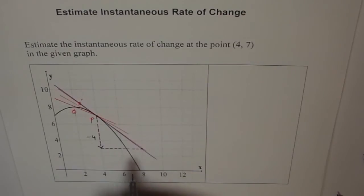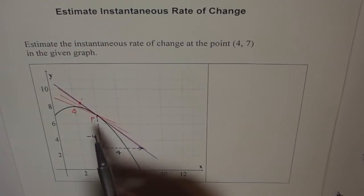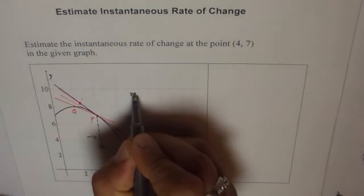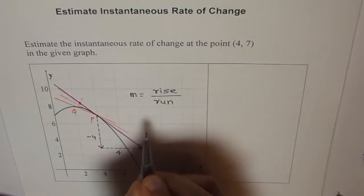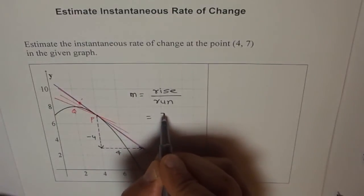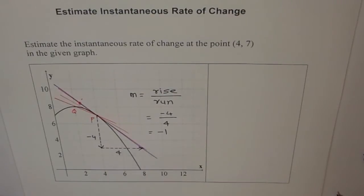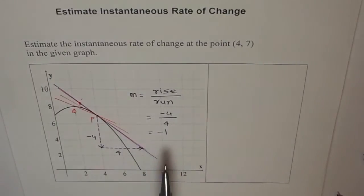So the rise is minus 4 and the run is this. 1, 2, 3, 4. Same. Run is 4. Correct. Now, if rise is minus 4 and the run is 4, what is the slope? So slope M equals to rise over run. Which means minus 4 over 4, which gives us minus 1. So estimate the instantaneous rate of change at (4,7). So our estimate is that the rate of change at (4,7) is minus 1.